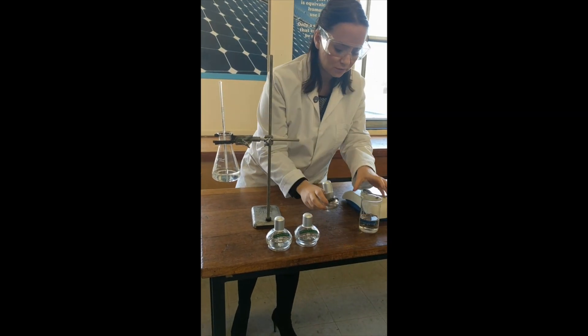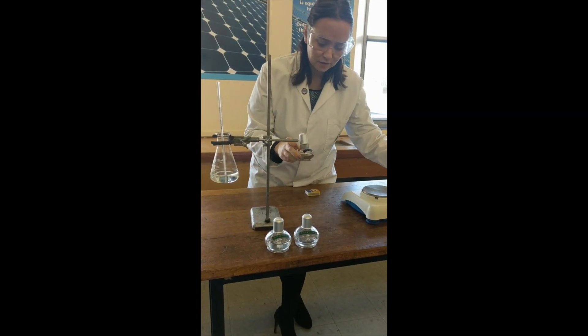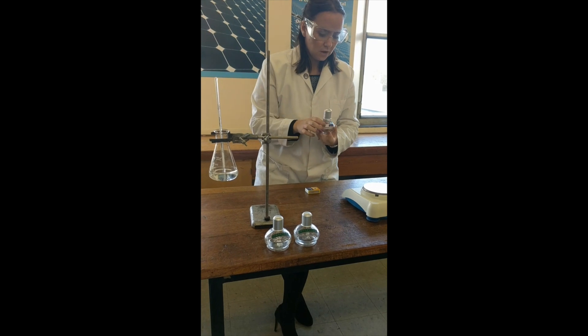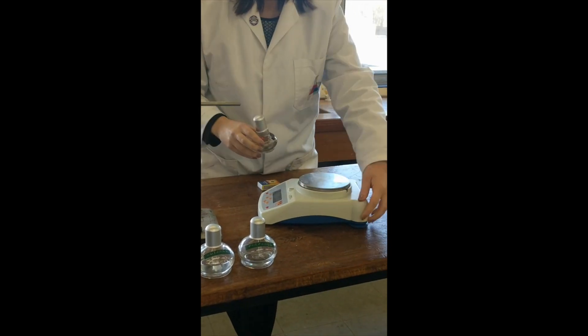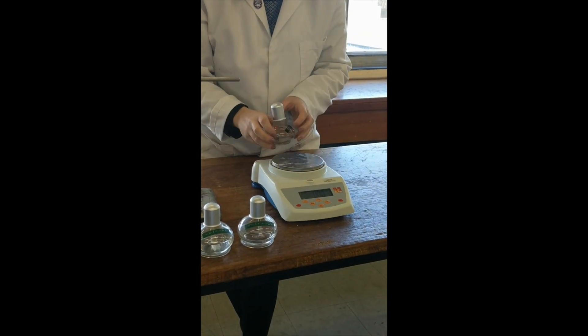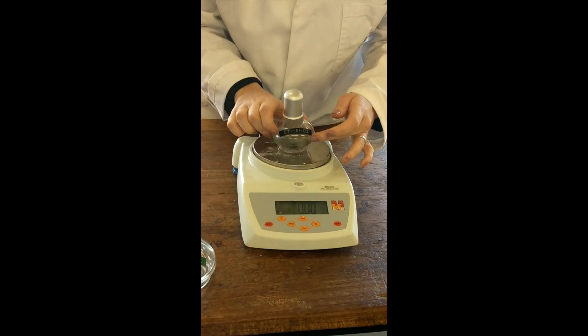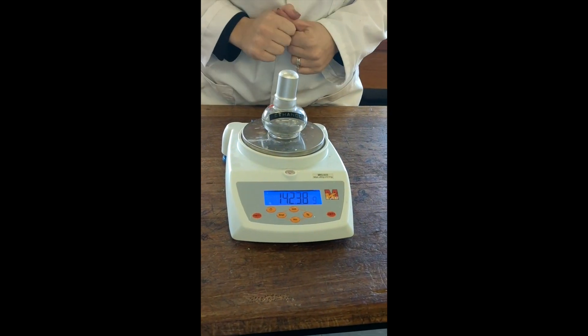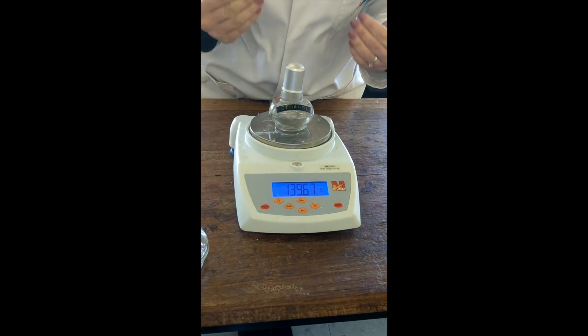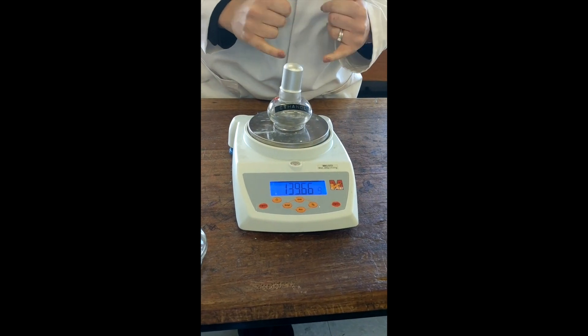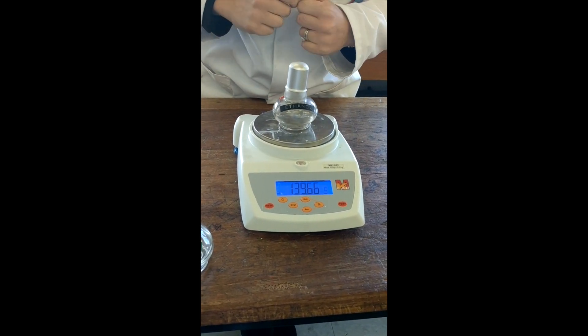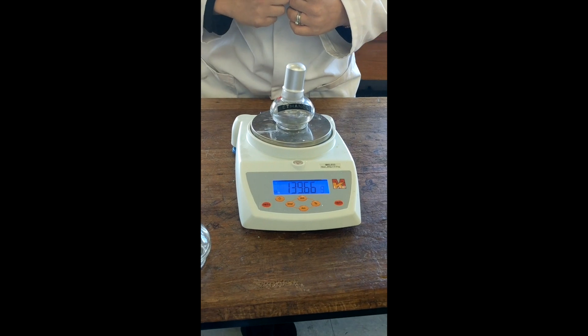So if we use our first fuel now, which is ethanol, you're going to need to weigh it on a balance with the cap on it. And you will record what the mass of the spirit burner and the cap is together before the practical.